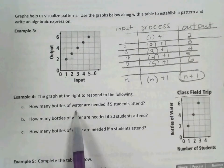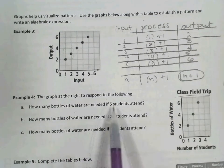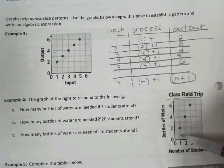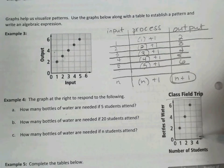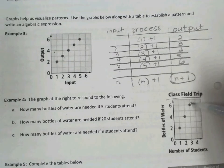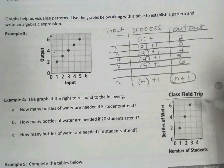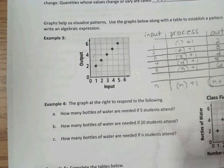So you can see the pattern, we're trying to establish a pattern, how many bottles of water are needed if 5 students attend. So we can see if 1 attends, we need 2 bottles. And so we can start to see this pattern. 2 students need 4 bottles, 3 students need 6 bottles. So you can imagine that 4 students would need 8, and 5 students would need 10 bottles.